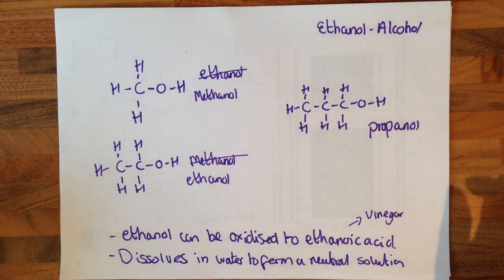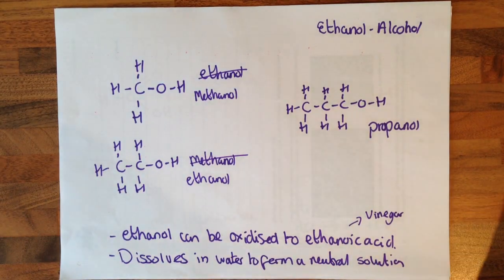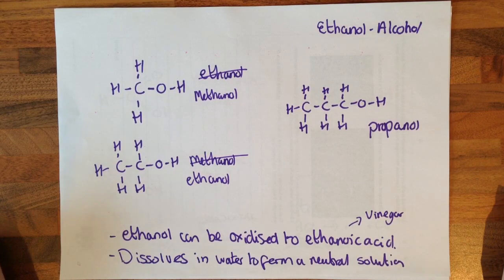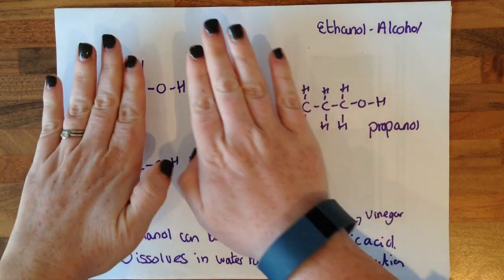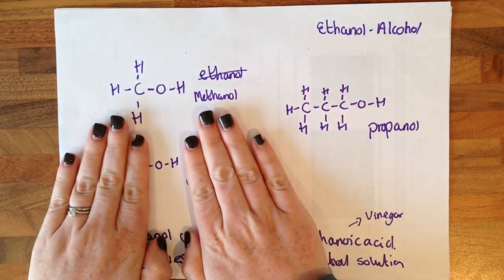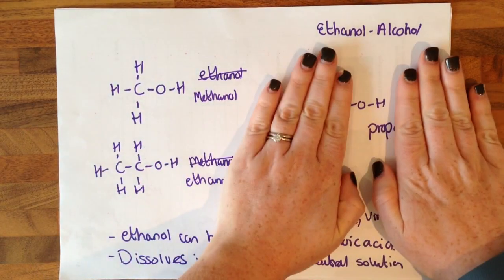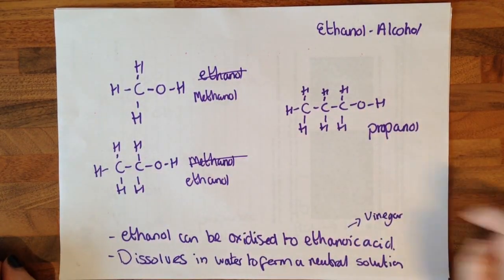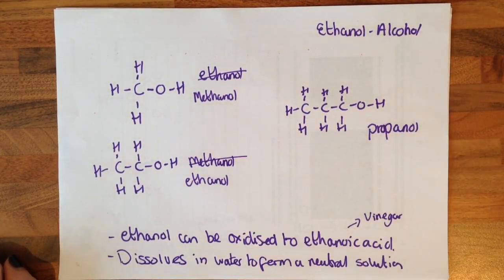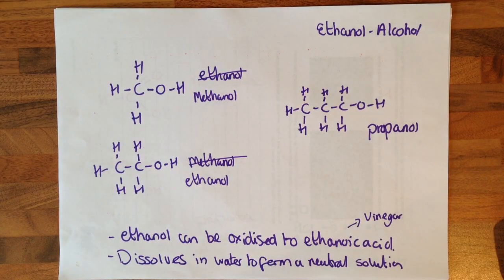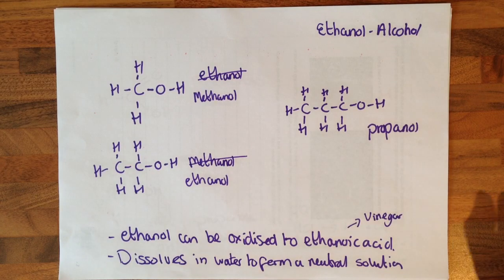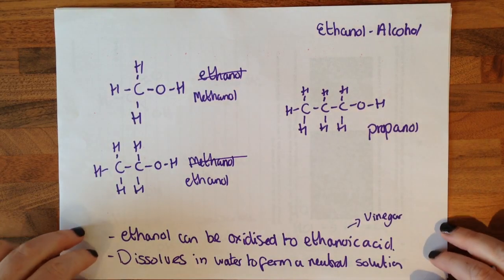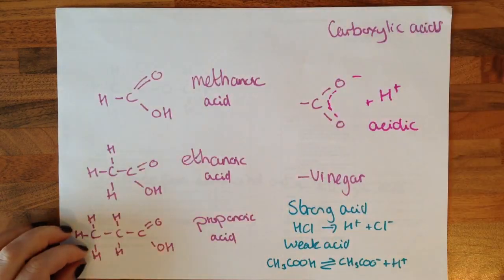They are probably going to ask you a relatively simple question about organic chemistry because it hasn't come up before. You need to know that that is the functional group for an alcohol, and there are three of them you need to know about: methanol, ethanol, and propanol. You need to know that ethanol can be oxidised — adding oxygen to it to make ethanoic acid, which tastes like vinegar — and it can dissolve in water to form a neutral solution.